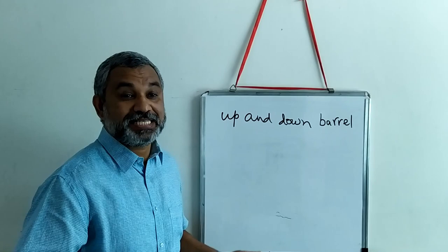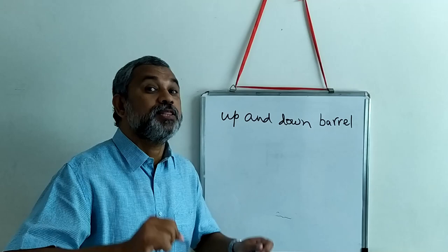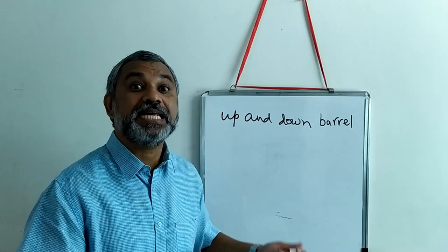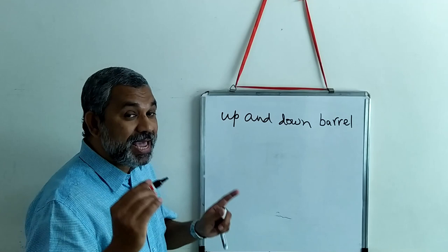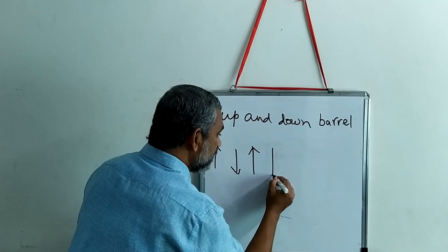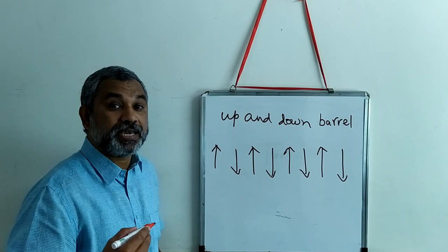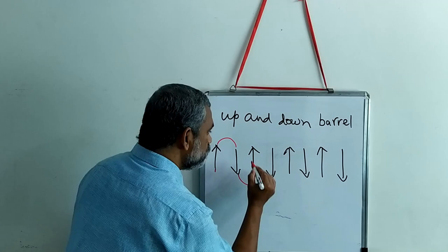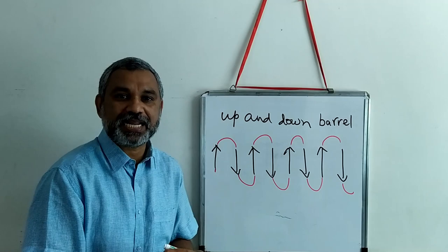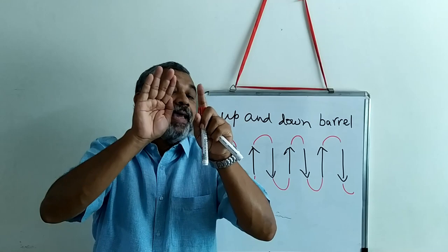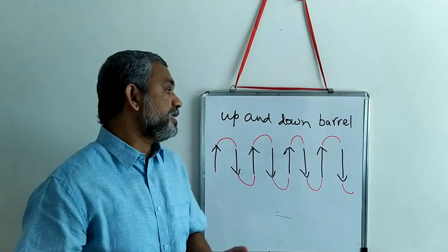The second structure is the up-and-down barrel. The difference is it has 8 anti-parallel structures. These 8 strands are arranged sequentially — 1, 2, 3, 4, 5, 6, 7, 8 — connected using simple hairpin loops. This can be folded to give a cylindrical structure. This is how the up-and-down barrel operates.